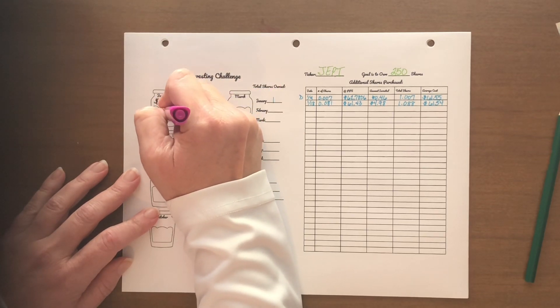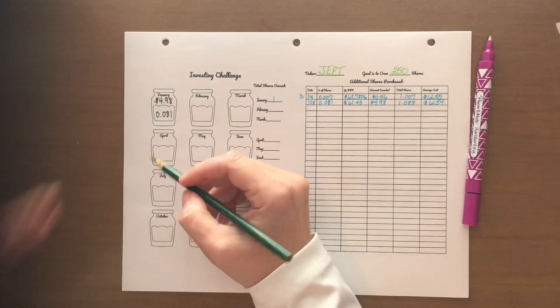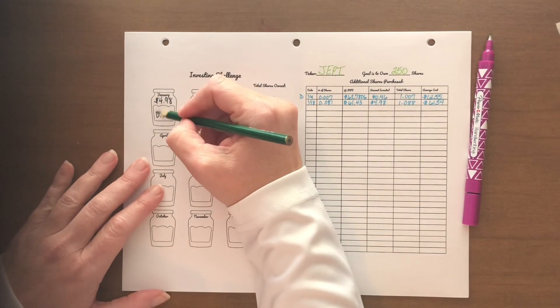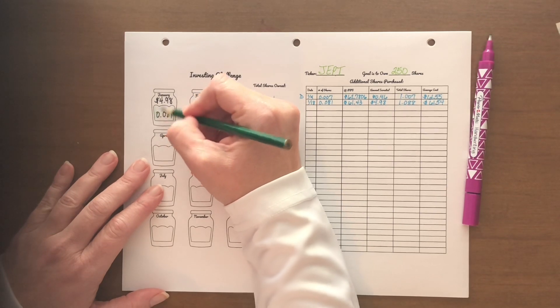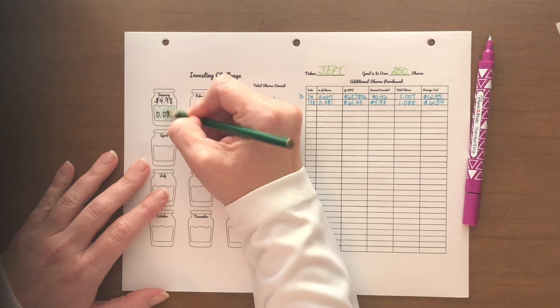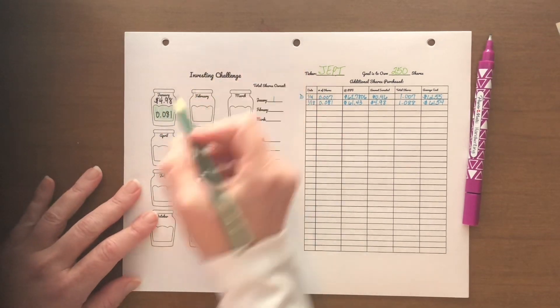So $5 into that is way under a tenth of a share. I was able to get 81 hundredths of a share, not a whole lot, but it's moving in the right direction.